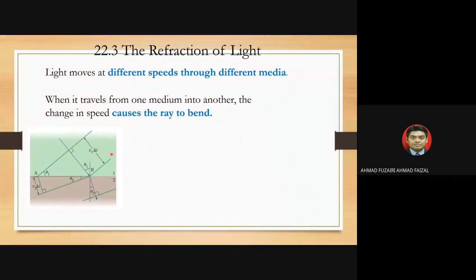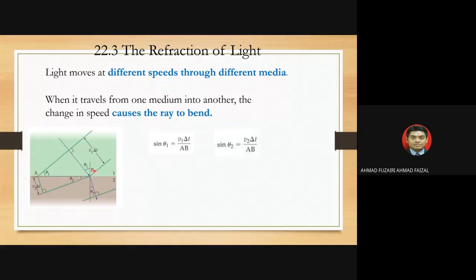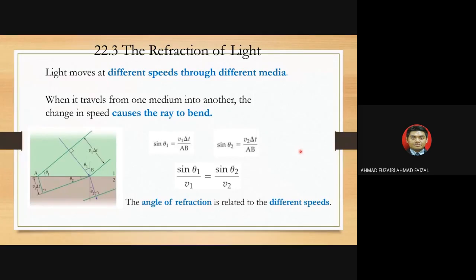There is a relationship between the angle of refraction and the different speeds. Trigonometrically, we can calculate angle theta one and theta two, where sine theta one equals v1 times delta t divided by the length of AB. Simplifying, we come up with the expression: sine theta one divided by v1 equals sine theta two divided by v2. So there is a relationship between the angle of refraction and the different speeds.